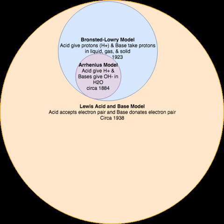For example, a Bronsted-Lowry model for the dissociation of hydrochloric acid HCl in aqueous solution would be: HCl + H2O → H3O+ + Cl−. The removal of H+ from HCl produces the chloride ion, Cl−, the conjugate base of the acid. The addition of H+ to H2O, acting as a base, forms the hydronium ion, H3O+, the conjugate acid of the base.